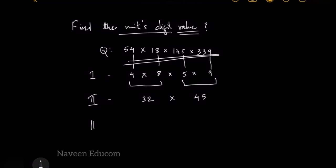Coming to step number 3, you have to write the unit digit of the remaining numbers: 32 is 2 and 45 the unit digit is 5.